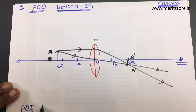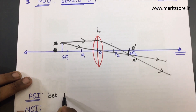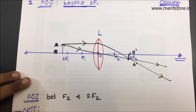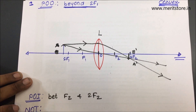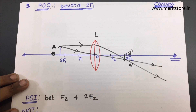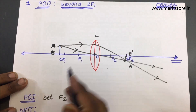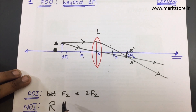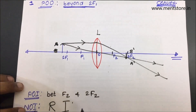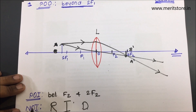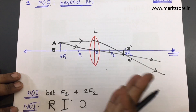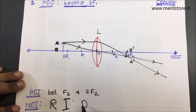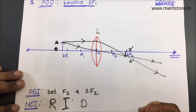So: position of the object is beyond 2f1, and position of the image is between f2 and 2f2. The nature of the image is real — it's on the opposite side — and it is inverted. Check the size: it is diminished. Remember, real images are always inverted.